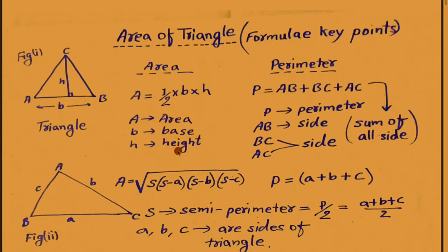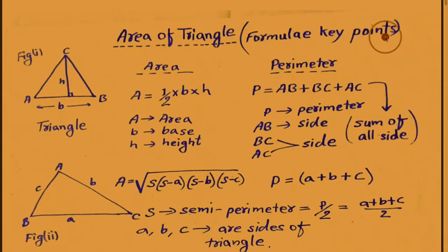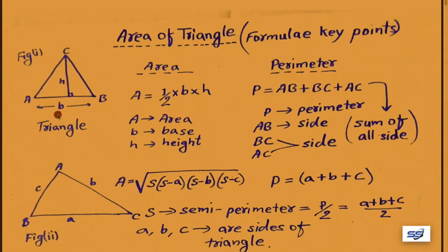In this formula, A means area, B means base, and height means height. But if height is not given or base is not identified, then we will face a problem in finding the area of a triangle. For secondary level, some different formulas are used. From figure one, triangle ABC has height H and base B, so area A equals half into base into height, and perimeter equals sum of all sides.